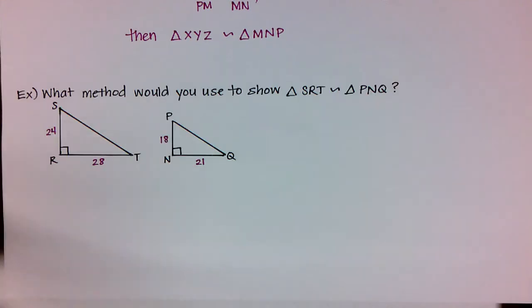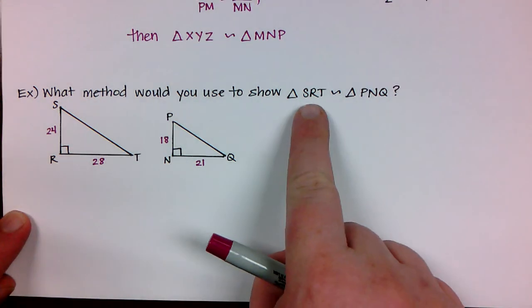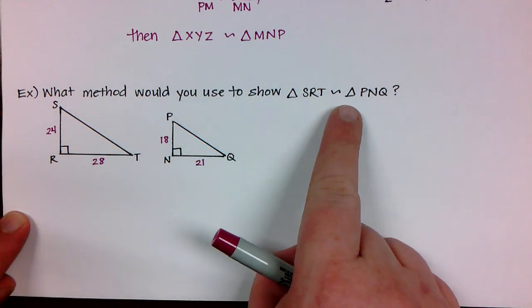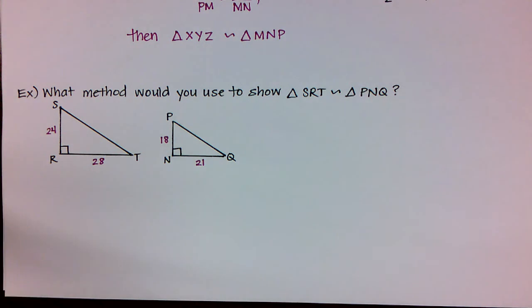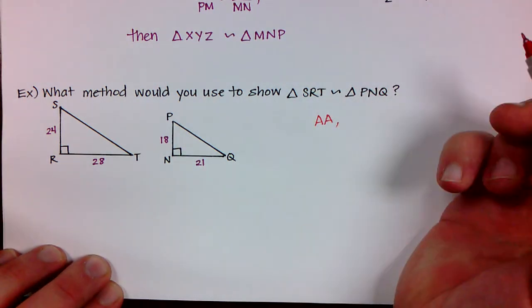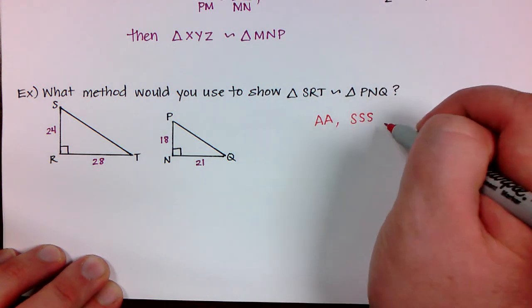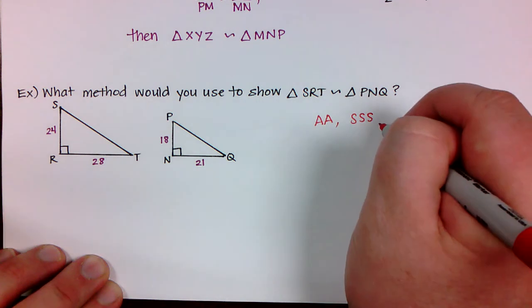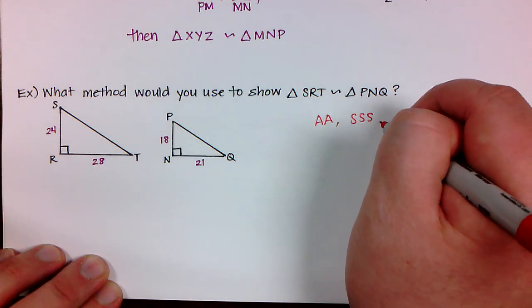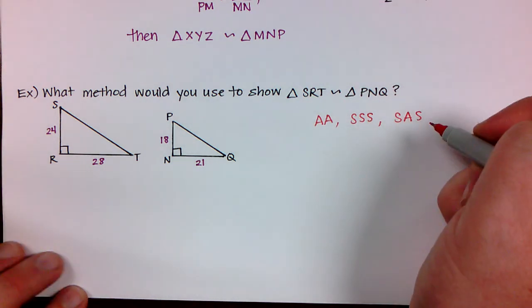And this time we're asked what method would you use to show that triangle SRT is similar to triangle PNQ. So let's remember the three different similarity postulates or theorems that we have now. We have the AA. So if we just find two angles we can prove that they are similar. We have side side side. So if all three sides are proportional to the three sides of the other triangle then they're also similar. And also SAS which is what we have right up above.